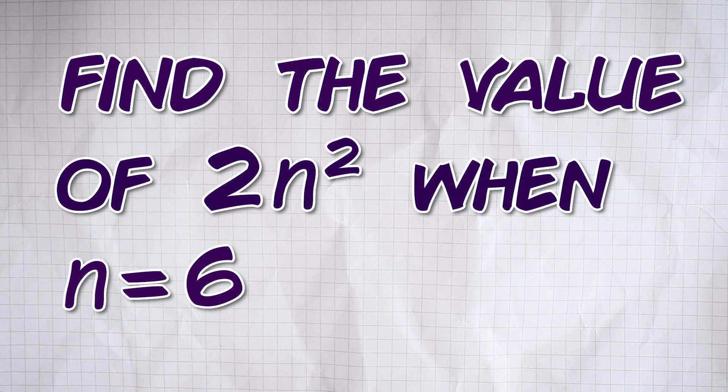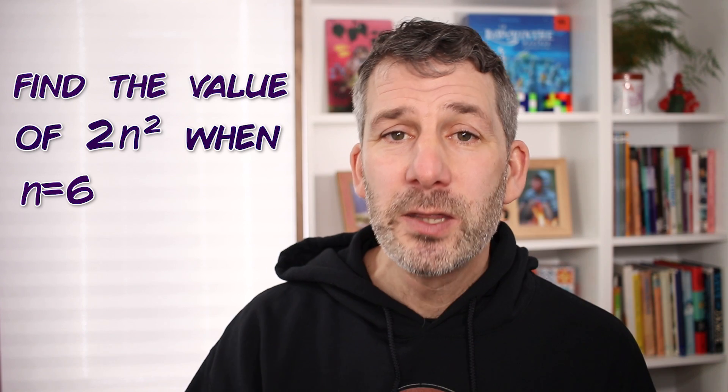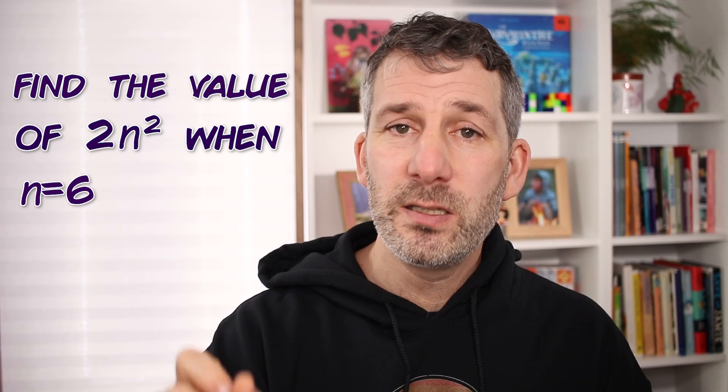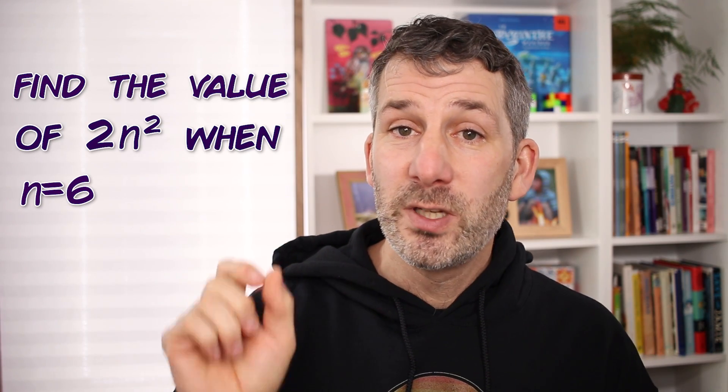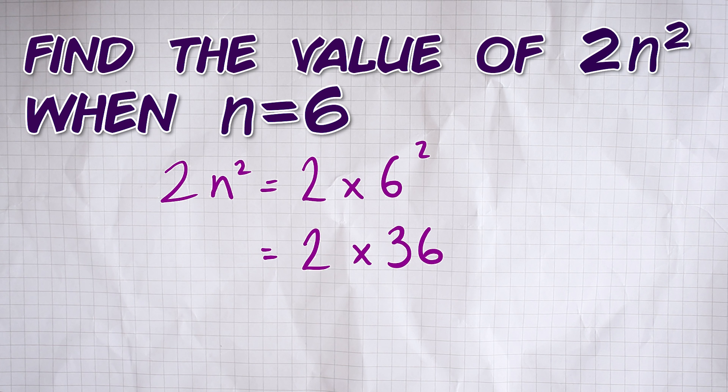If you've got 144, you've fallen into the trap, you've made this mistake, and the reason is that you have done things in the wrong order. What you need to do with these is you need to do the squaring first. So you would do 6 squared, which is 36, and then multiply it by 2, which gives you an answer of 72.